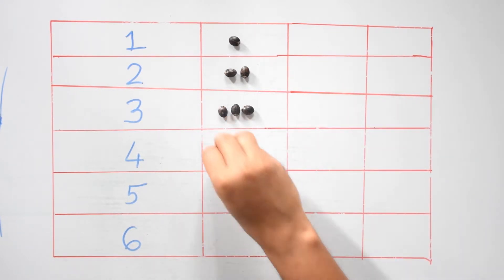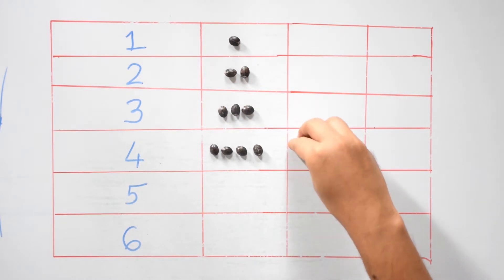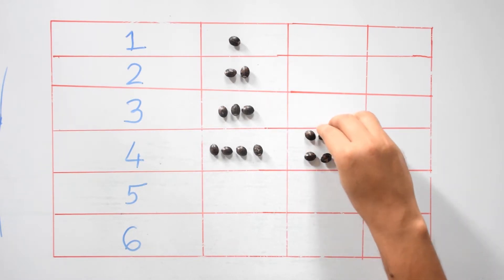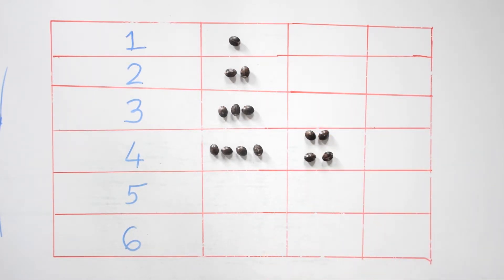Now next let's take four. Four seeds can be arranged in two seeds in one group and two seeds in another group. Can we arrange in any other way? No.